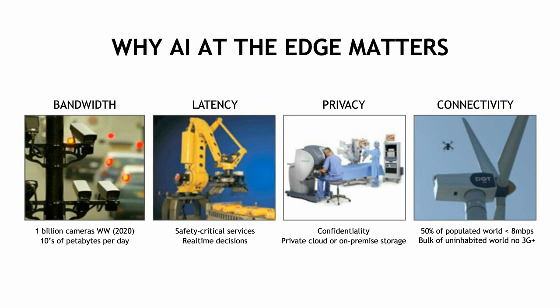Why is AI at the edge so important? It's simple. For systems in the field, there are many use cases where you simply cannot rely on a round trip through the cloud to solve the problem. For some problems like AI cities, the scale is so big and the amount of data generated is so vast that the network cannot possibly support it. For robotics, you have devices that support safety-critical services and need to make millisecond decisions at the speed of light. For many companies, data security is of paramount importance to protect the privacy of individuals and keep intellectual property safe. And for many applications in remote areas where robots and UAVs are ideally suited, network coverage is spotty or just doesn't exist, or it's slower with the degraded speeds of 2G or satellite communications.